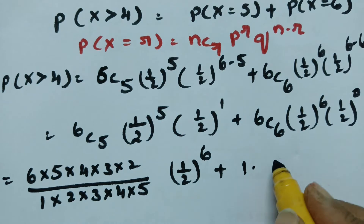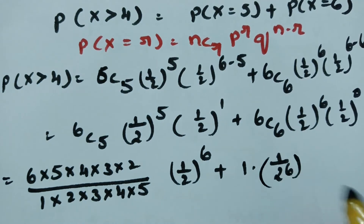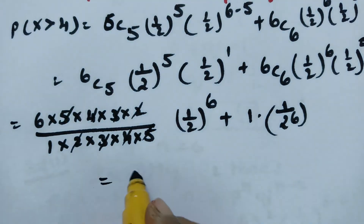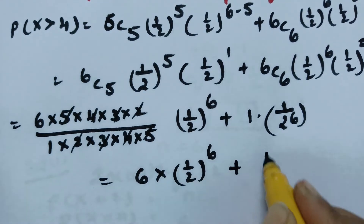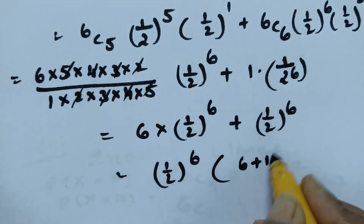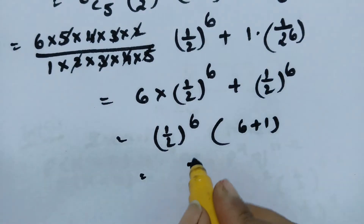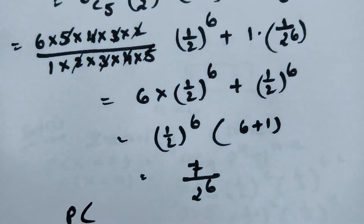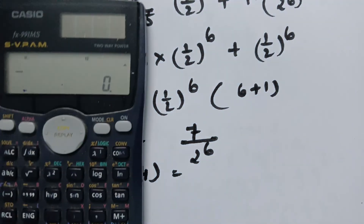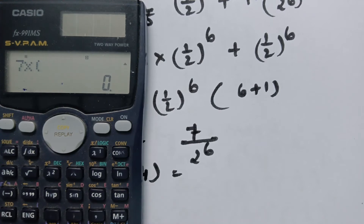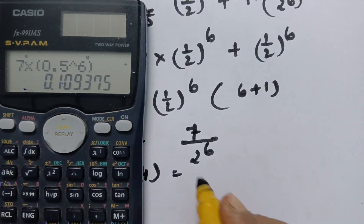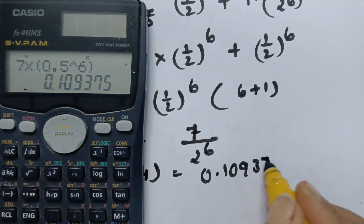Taking (1/2)^6 common gives (6 + 1) times (1/2)^6, which is 7 divided by 2^6, or 7 times 0.5^6. The probability of hitting the target more than 4 times is 0.109375.